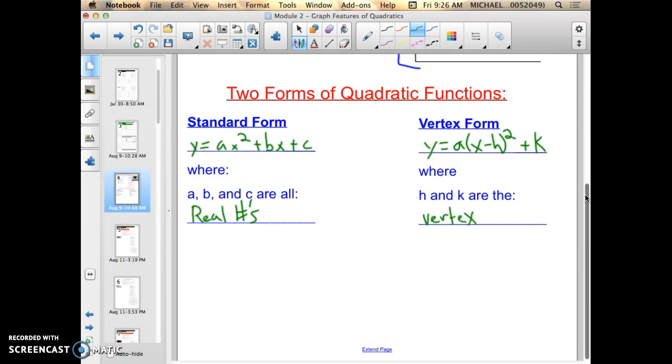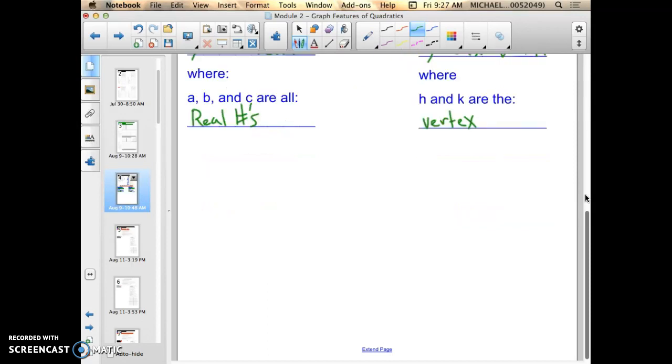The h and k value are the vertex. That's why it's called vertex form. That's actually very convenient because in standard form you have to do a little bit of math to find the vertex, but if you're given a function in vertex form, the vertex is already given to you.